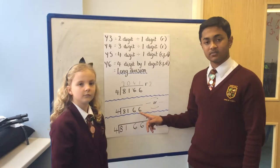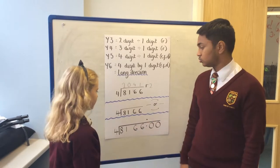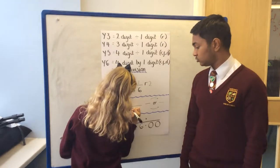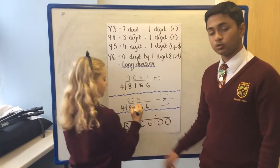However, if we want to do it as a fraction, we do the same method, so 4 into 8 goes twice. 4 doesn't go into 1, so we put a zero. 4 into 16 goes four times. 4 into 6 goes once.